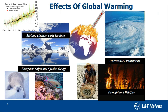It depletes the ozone layer and causes other effects of global warming. You would have seen melting glaciers, hurricanes, and rainstorms happening at a magnitude that was not seen in earlier centuries. We also see extreme temperatures during summer and winter in our own country, and we see many species going out of the ecosystem because they are not able to adapt to the new environment.